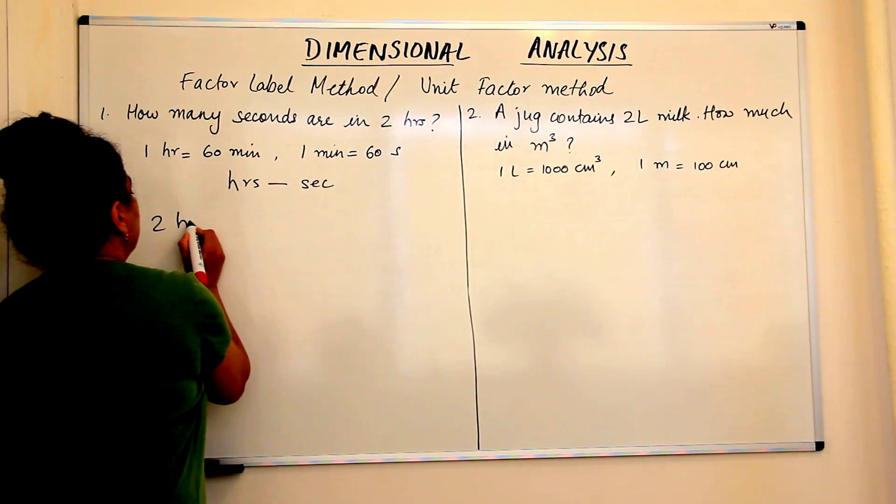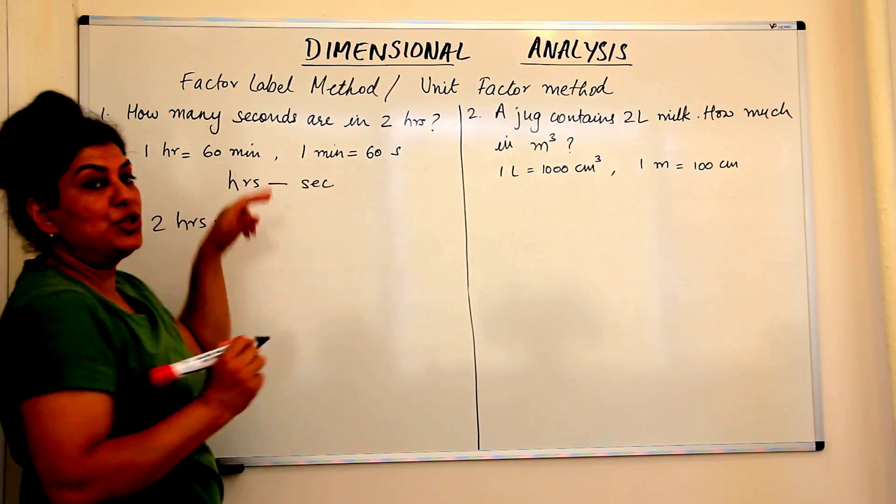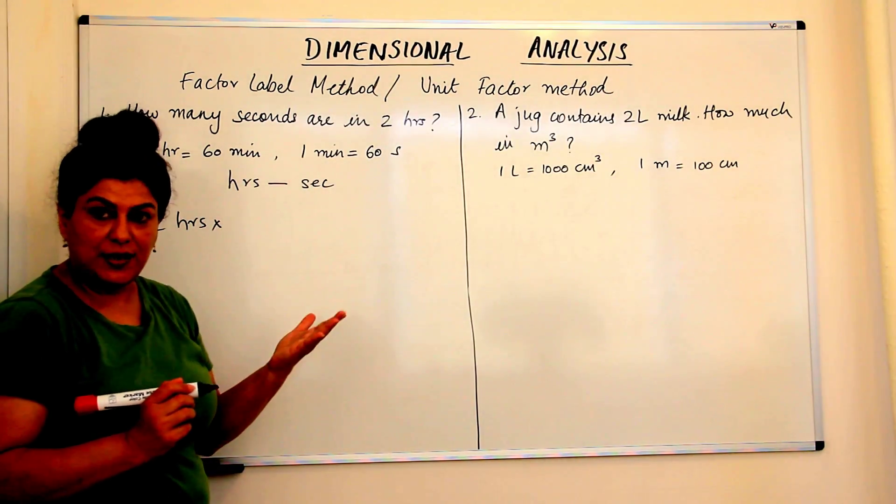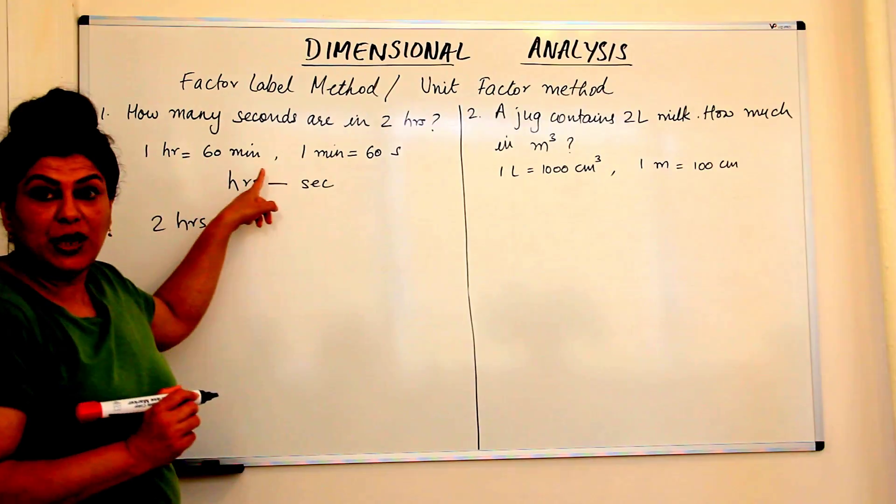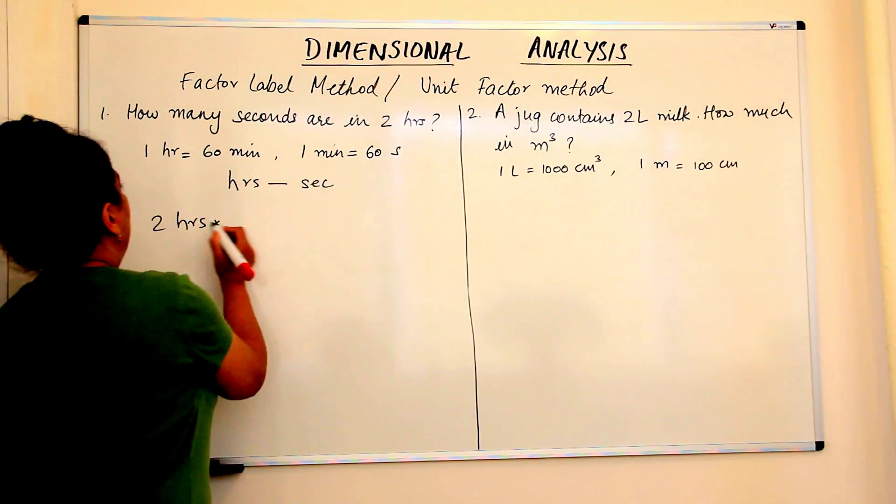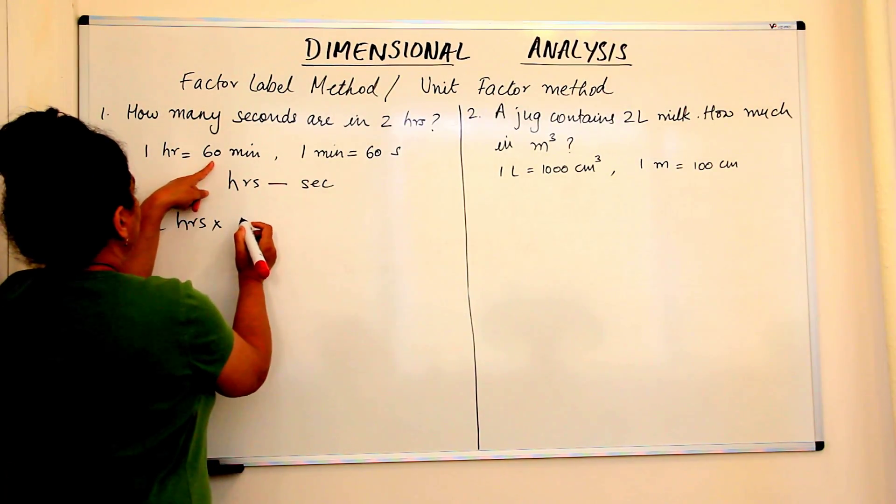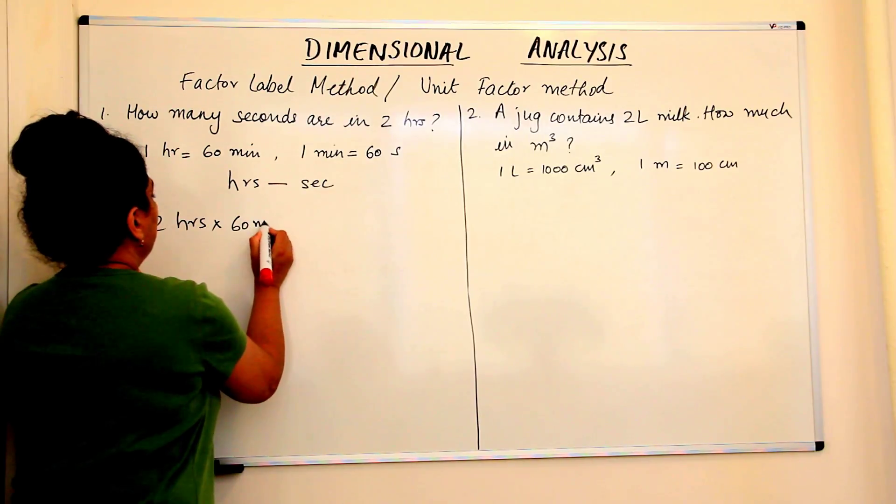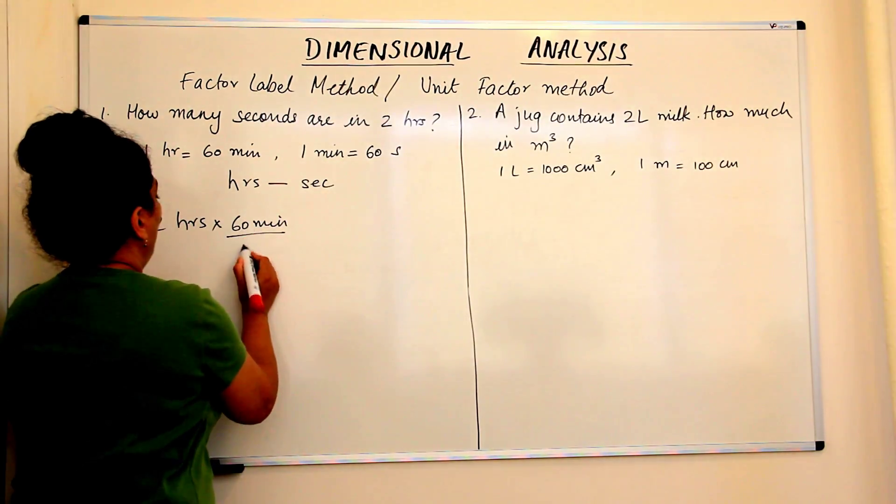We'll say two hours multiplied by a conversion factor which has the hour so that it gets cancelled out. This one has the hour which should come in the denominator. So we have 2 into 60 minutes upon one hour.